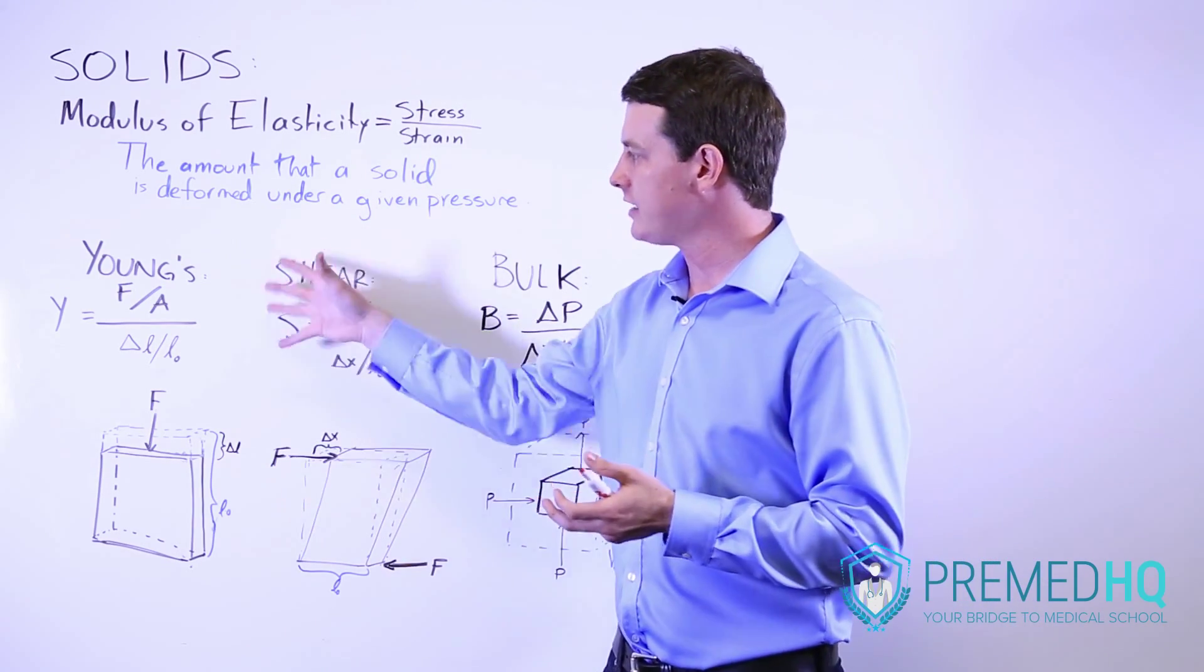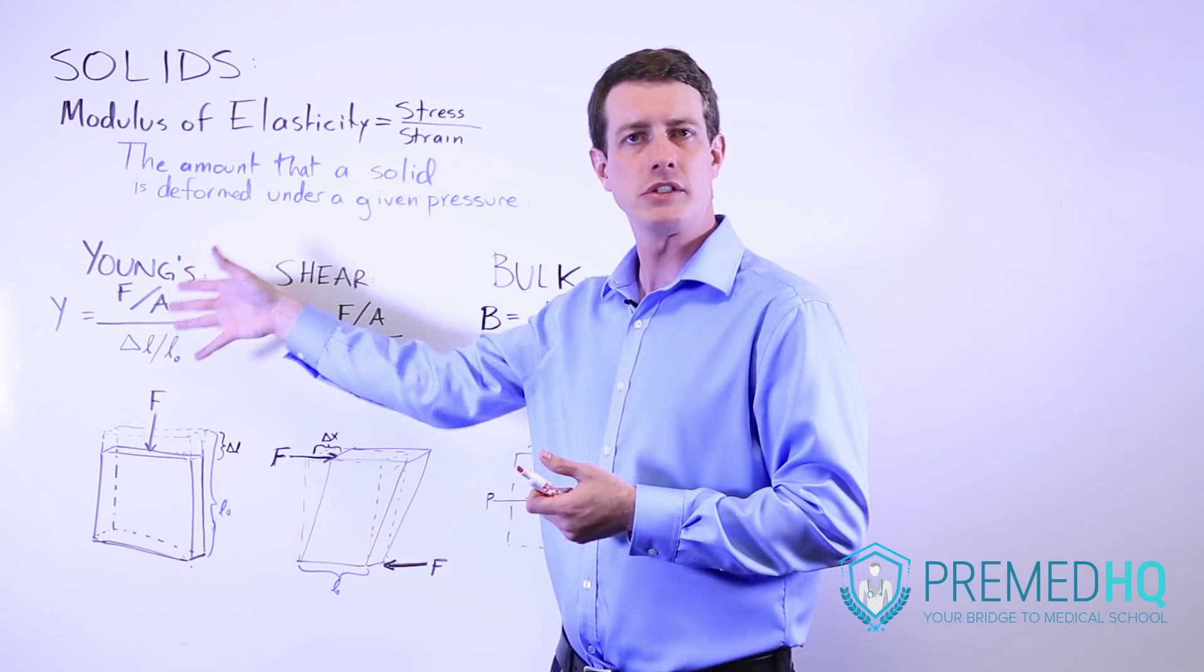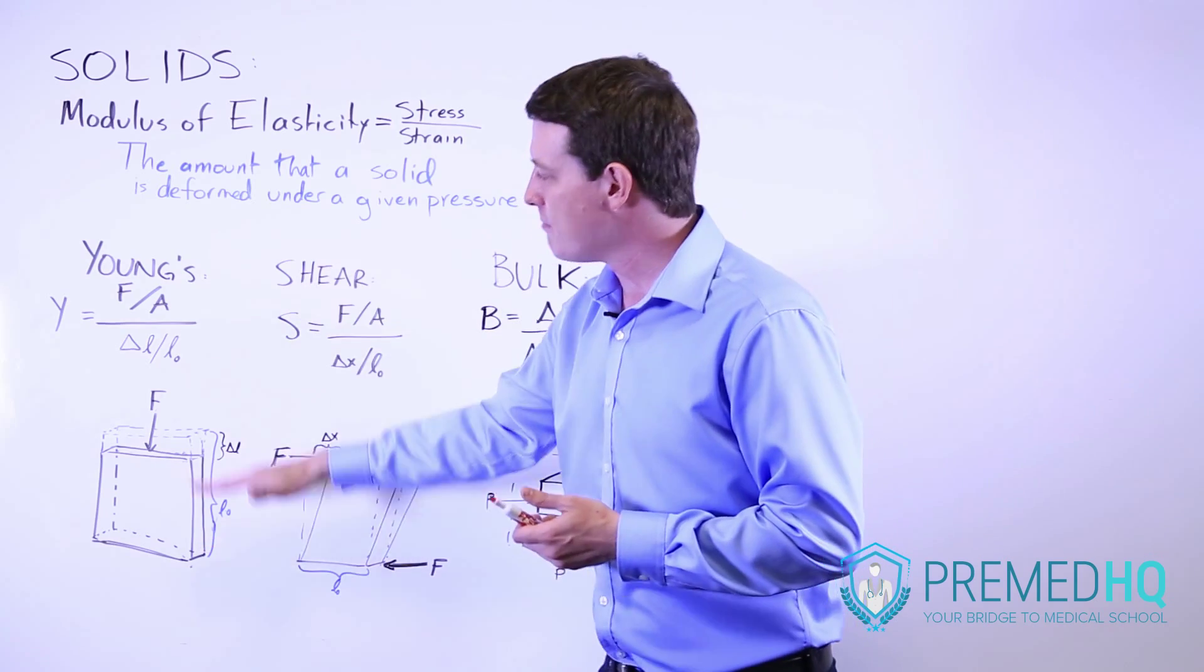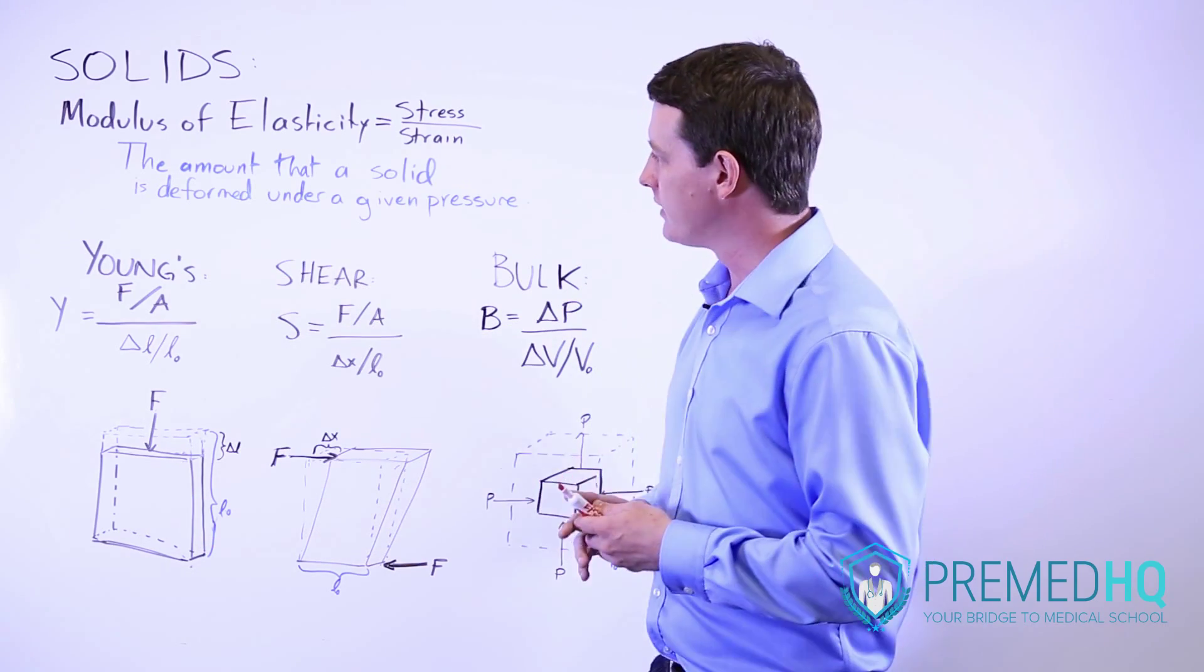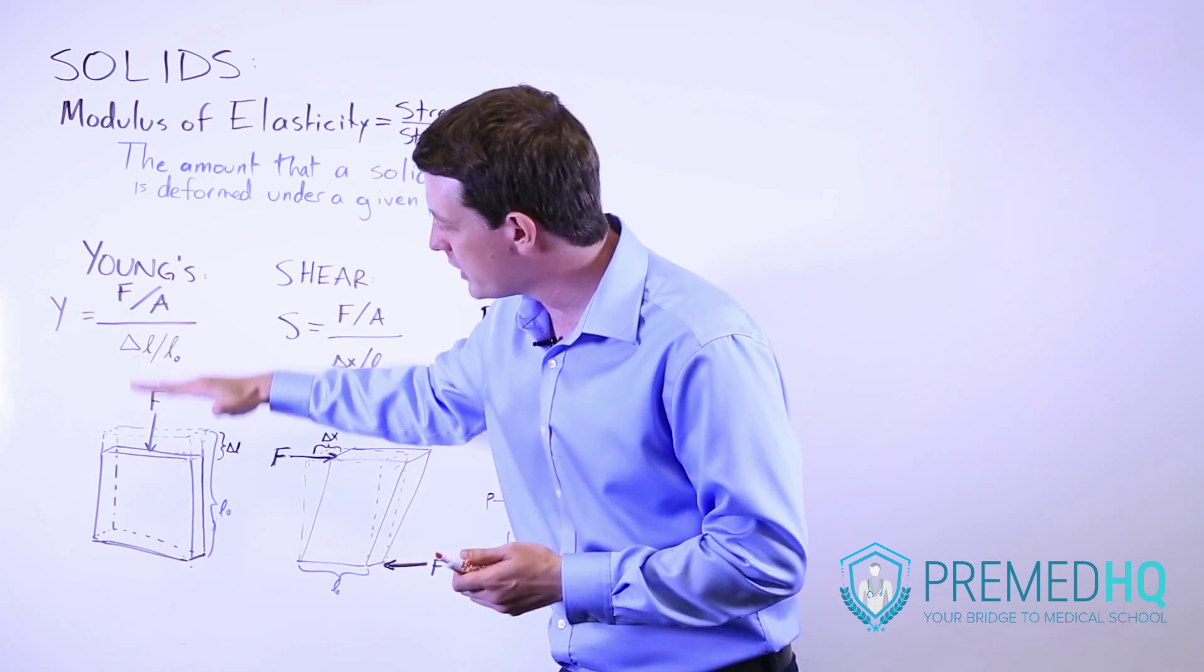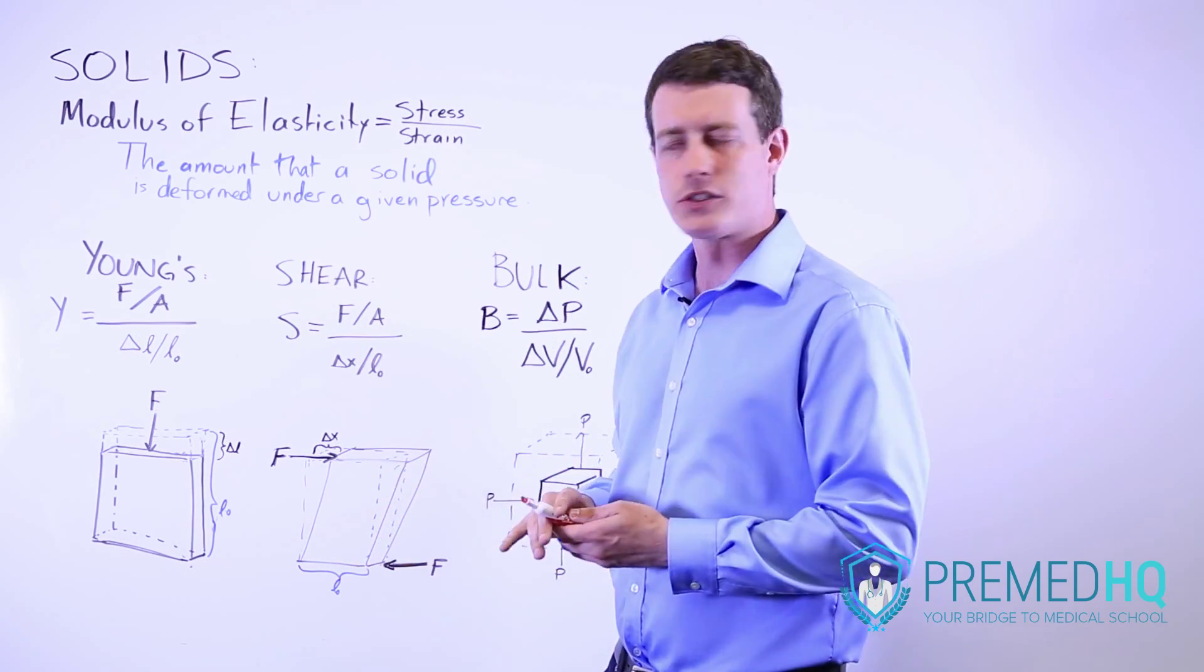So the first one we'll go through is the Young's modulus. Young's modulus, which is represented by multiple letters but we'll use Y here, is basically a one-dimensional change that we're looking at. So here what we're doing is we're applying a force and we're seeing how much the solid changes shape within the vertical dimension.